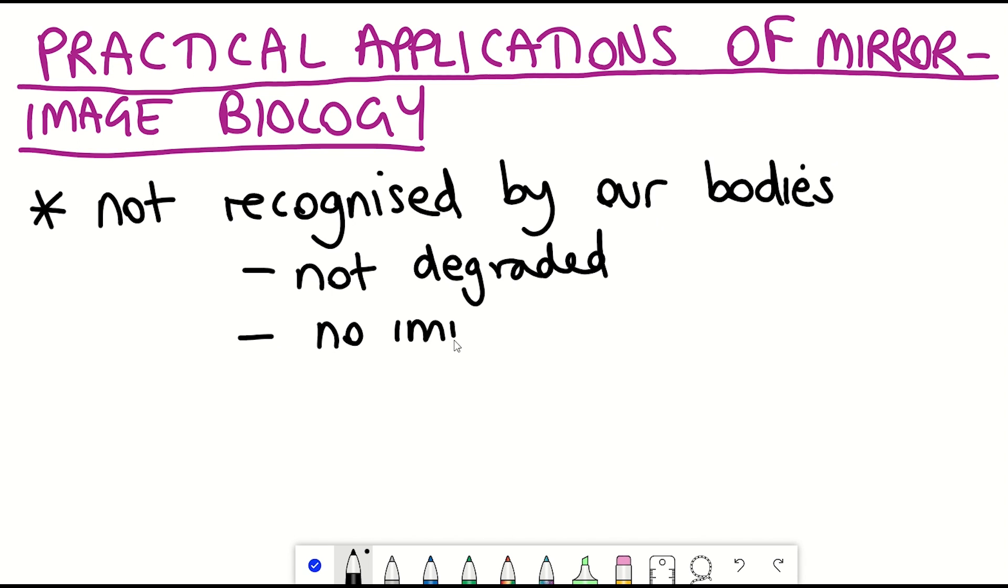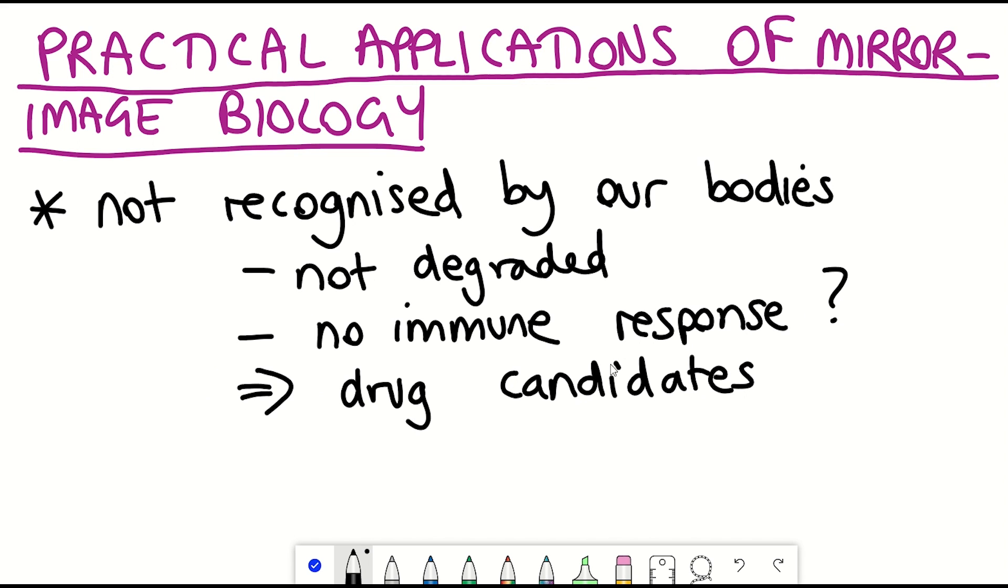It has the consequence that our body's molecular machinery wouldn't necessarily recognize the mirrored version of, say, DNA or RNA or proteins. And so one, that could mean that they're resistant to enzymatic degradation, and so their half-life within the body could be longer. And it could also potentially avoid triggering immune responses, making them attractive drug candidates.